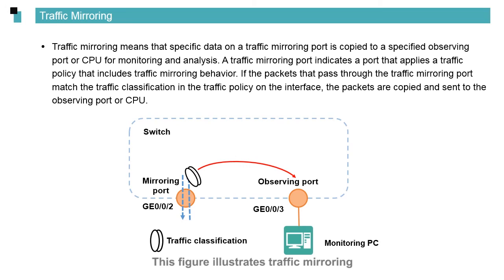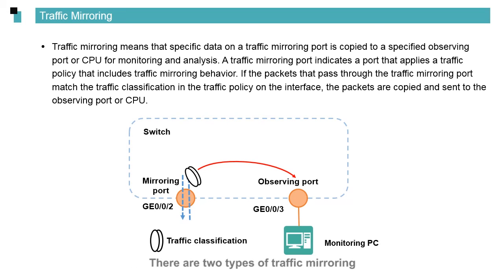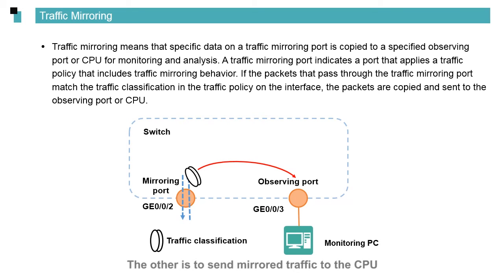This figure illustrates traffic mirroring. The filter in the figure indicates that users can use an ACL to match desired traffic and copy the matched traffic to a specified port. There are two types of traffic mirroring: one is to deliver mirrored traffic to an interface, and the other is to send mirrored traffic to the CPU.